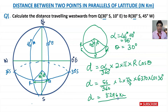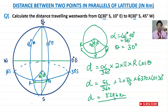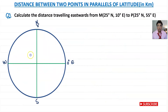What you need to note here is that this object is moving around a small circle from east to west, and therefore we add the angles. Now let's do question two: we need to calculate the distance traveling eastwards from point M.